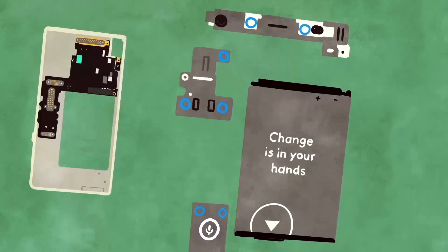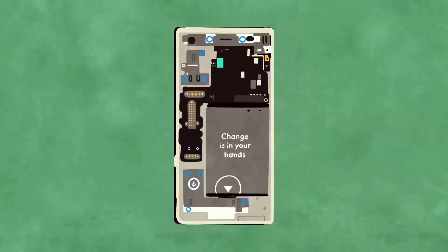We have two approaches for realizing longevity: modularity and long-lasting software support. Let me start with modularity. This is a camera module of the Fairphone 2. In the Fairphone 2, you have six modules like this.